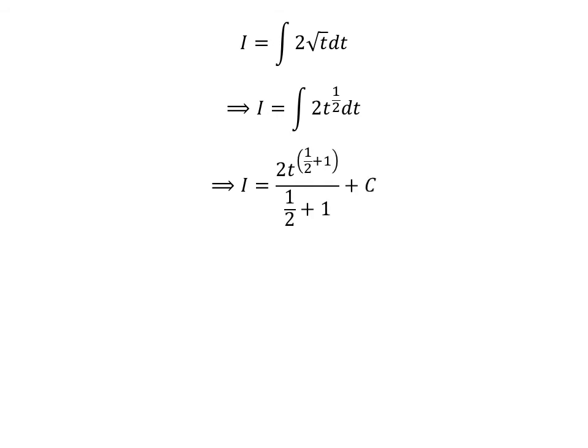We know the integral of t raised to the power of one half is equal to t raised to the power of one half plus 1 upon one half plus 1. So i is equal to 2 times t raised to the power of one half plus 1 upon one half plus 1 plus capital C. Capital C is the arbitrary constant of the indefinite integral — never forget to add this constant.